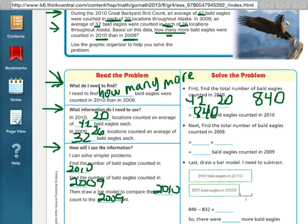Next, find the total number of bald eagles counted in 2009, which I'll do 32 times 26 for that. So, 32 times 26 is 832. You can work that out any way that you want. The traditional way, the partial products, distributive property, any way that you've learned that you like, you can work out 32 times 26.